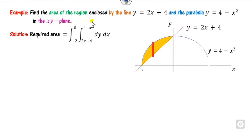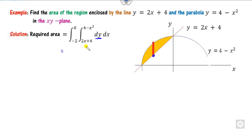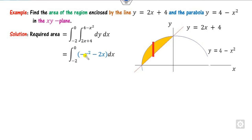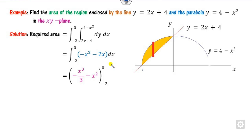Taking dy first: integrate from 2x + 4 to 4 - x². This gives (4 - x²) - (2x + 4) = -x² - 2x. Integrating -x² - 2x gives -x³/3 - x² evaluated from -2 to 0. The required area is the result in square units.